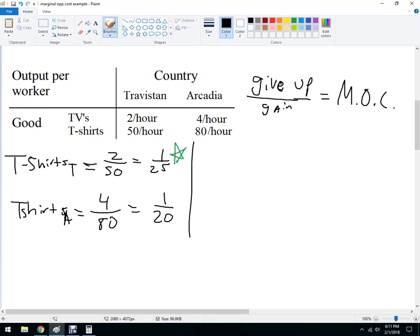This is smaller. And then when we're producing TVs in Travistan, we're going to give up 50 T-shirts. We're going to gain two TVs. So it's 25.